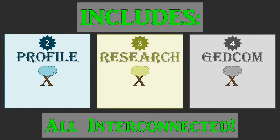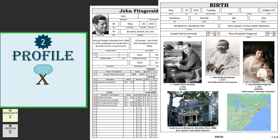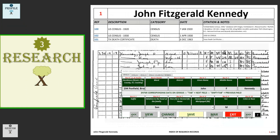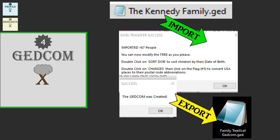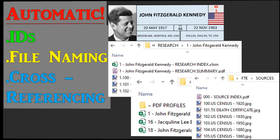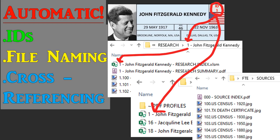The Tree Workbook also comes with the following interconnected files: the Profile Workbook, used to summarize all aspects of an ancestor's life; the Research Workbook, used to add and summarize source details; and the GEDCOM Workbook, used to import and export existing tree data. The unique IDs issued allow files and charts to be cross-referenced, making navigation and organization a breeze.